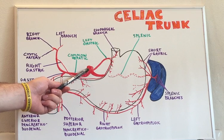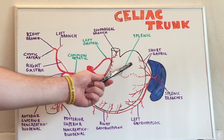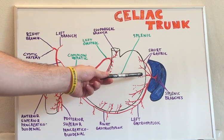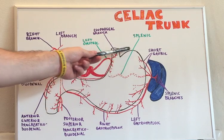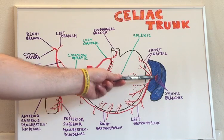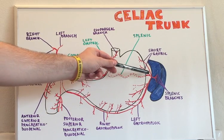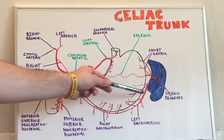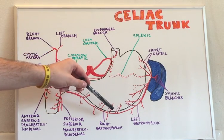Following the splenic artery off of the celiac trunk, it has a tortuous course where it reaches the spleen. It has the short gastric branches, which supply the fundus of the stomach, the splenic branches, which supply the spleen itself, and also the left gastroepiploic branches, which supply the greater curvature of the stomach.